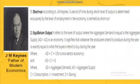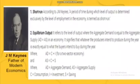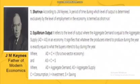Equilibrium output refers to the level of output where aggregate demand is equal to aggregate supply in an economy. It signifies that whatever the producers intend to produce during the year is exactly equal to what the buyers intend to buy during the accounting year. The equation is: AD equals C plus I. This is a two-sector closed economy, and AS equals C plus S. Since AD equals AS, we can say that I equals S.